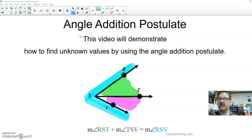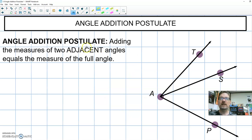This video lesson is going to talk about the angle addition postulate, what that means for us, and then when we come into class tomorrow we're going to use it to find the measure of unknown angles. So the measure of two adjacent angles equals the measure of the full angle. Notice we have two angles inside a bigger angle.